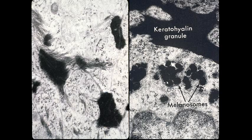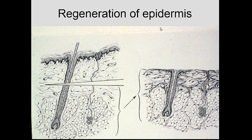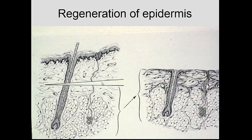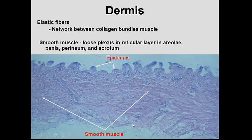In terms of epidermal regeneration: if a wound still has sweat glands and hair follicles below it, the surface can regenerate from those cells. The different degrees of burn correspond to how deep the injury goes. If cut below the epithelial source, a skin graft is required — that is a third-degree burn.